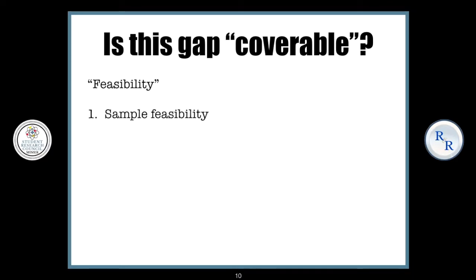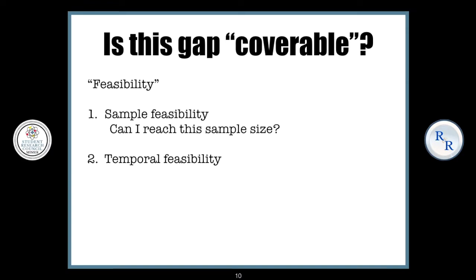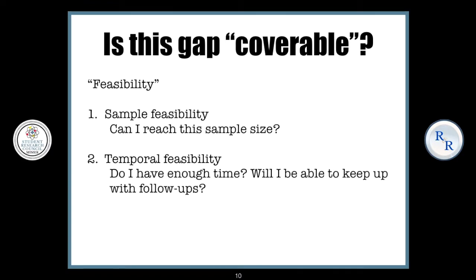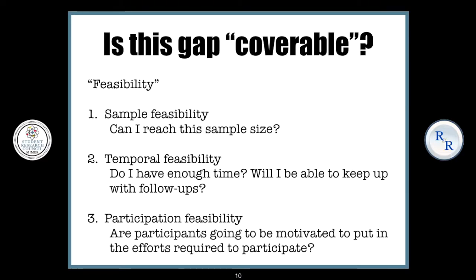The first one is sample feasibility — that is, can I reach this sample size? Is this sample size available in the area that I'm planning to research? The second one is temporal or time feasibility: do I have enough time? Will I be able to keep up with the follow-ups of this disease I'm planning to research? And the third one is participation feasibility — that is, are the participants going to be motivated to put in the efforts? If there is no incentive, is anyone even going to participate in this research?